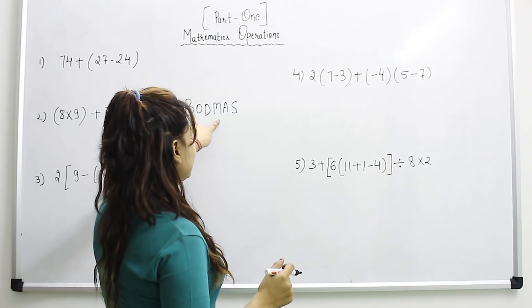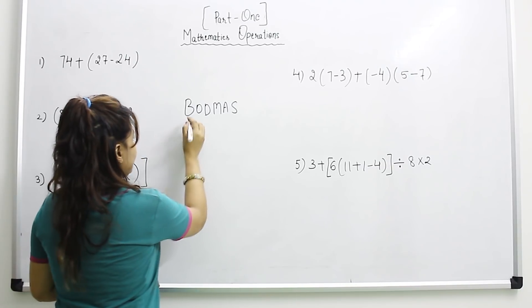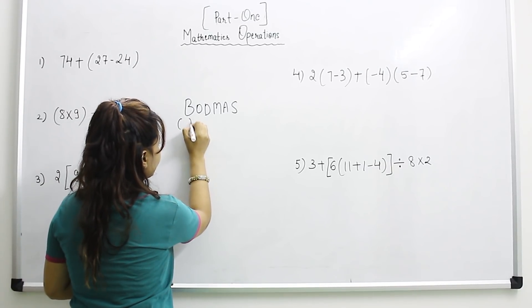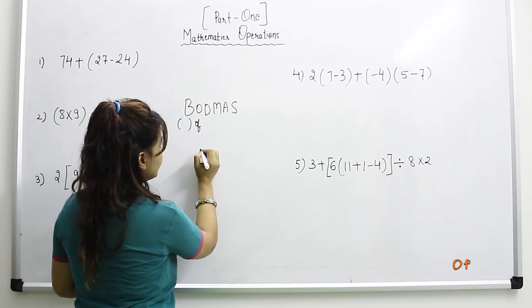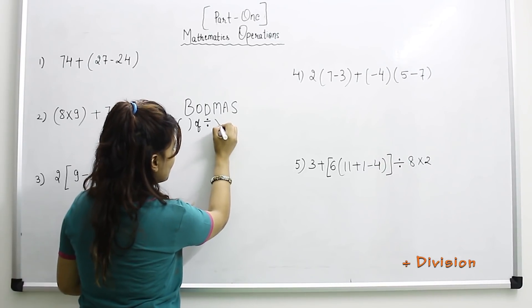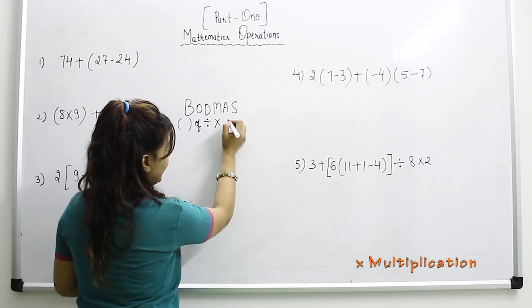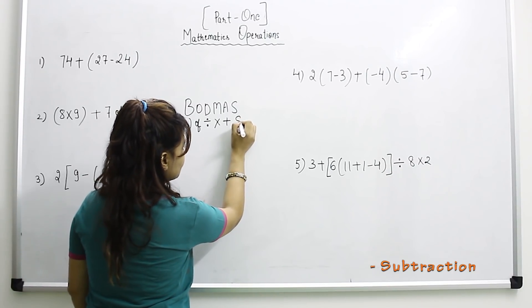Because this trick is basically a process to solve these problems. B indicates bracket, O indicates of, D indicates division, M indicates multiplication, A indicates addition, and S indicates subtraction.